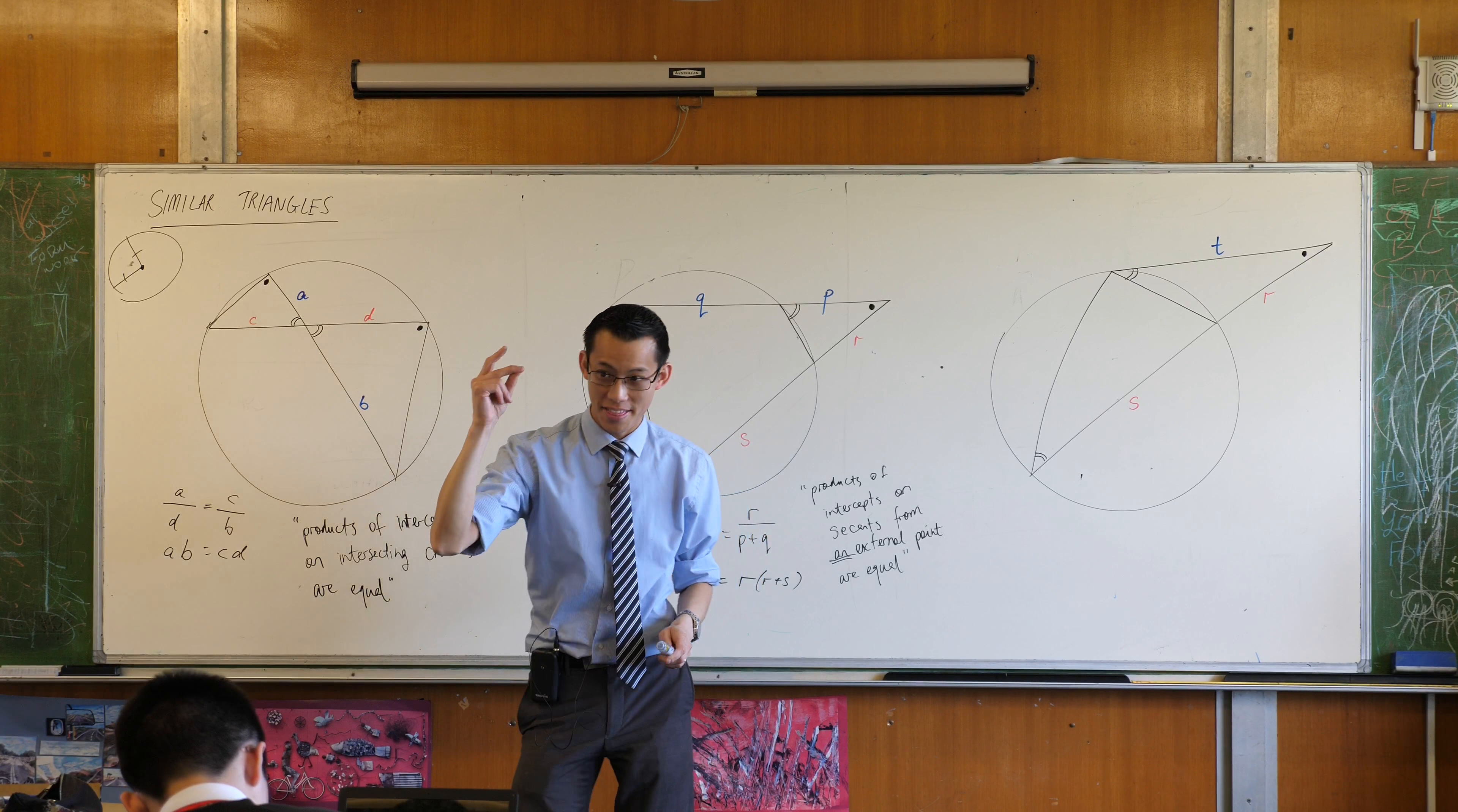So if I were to state the similarity relationship here, say for example triangle ABD is similar to, what's the corresponding order for the other ones? What angle corresponds to A here? It's still A again, isn't it? And then here, just be careful. ABD here goes dot, double, and then the unlabeled angle. So therefore here I've got to go dot, double, and then the unlabeled angle. So it's A, C, B. Does that make sense?